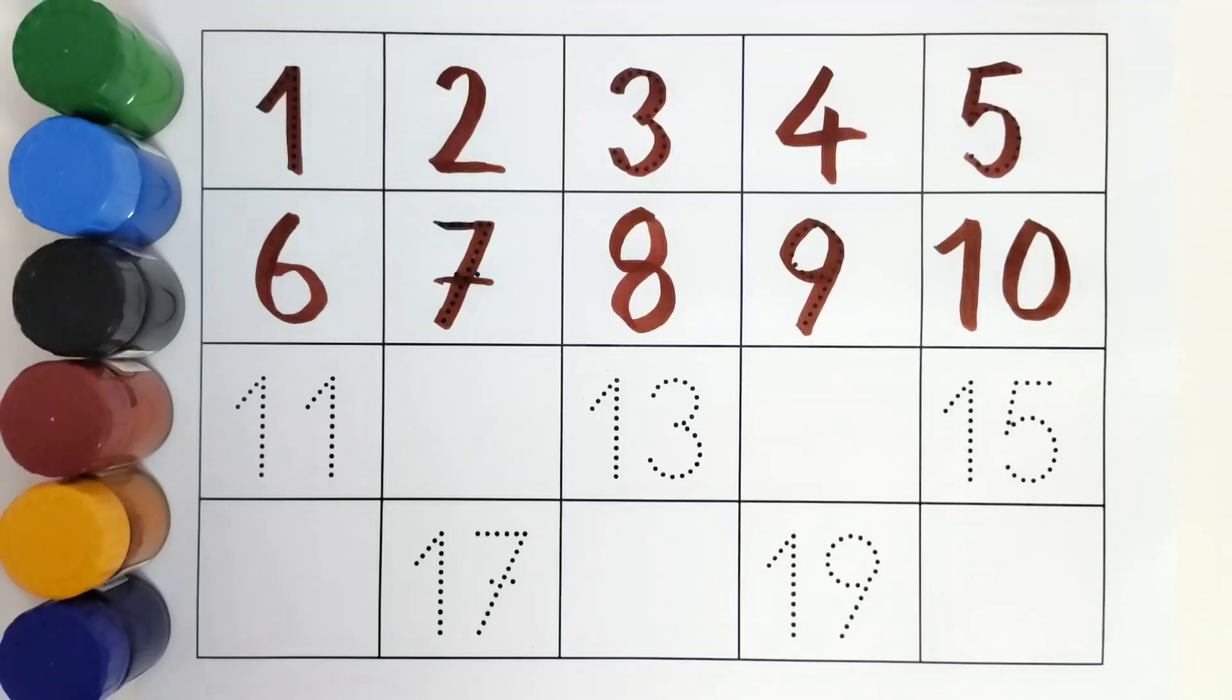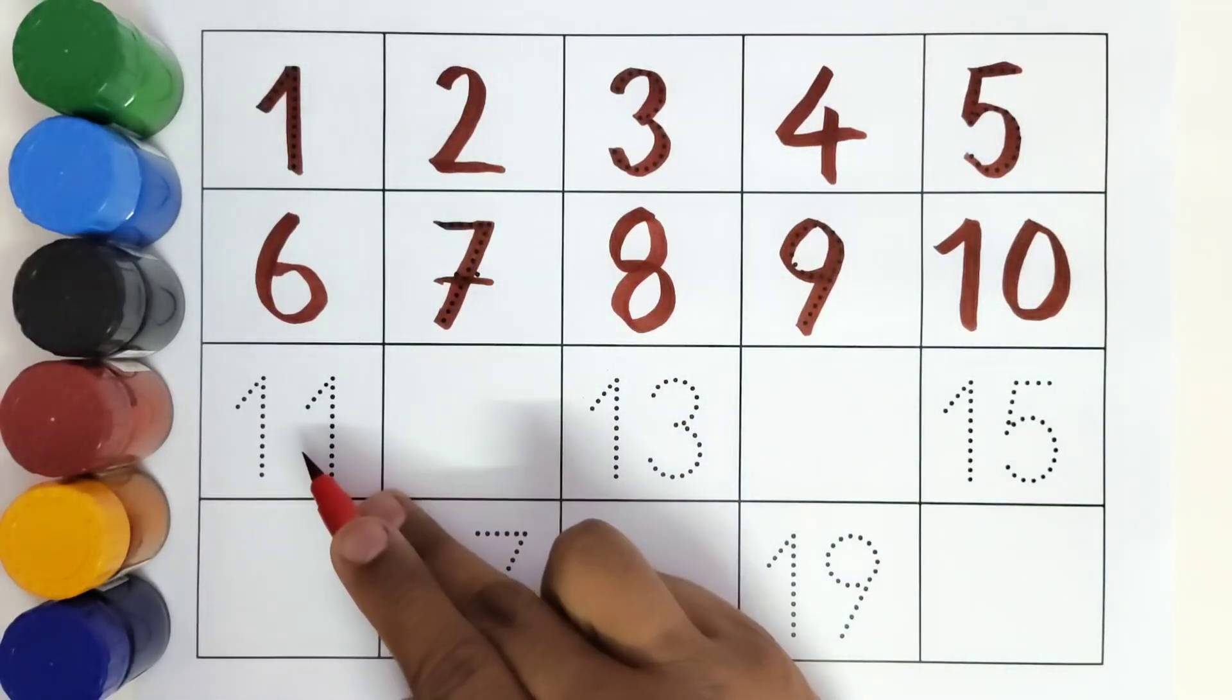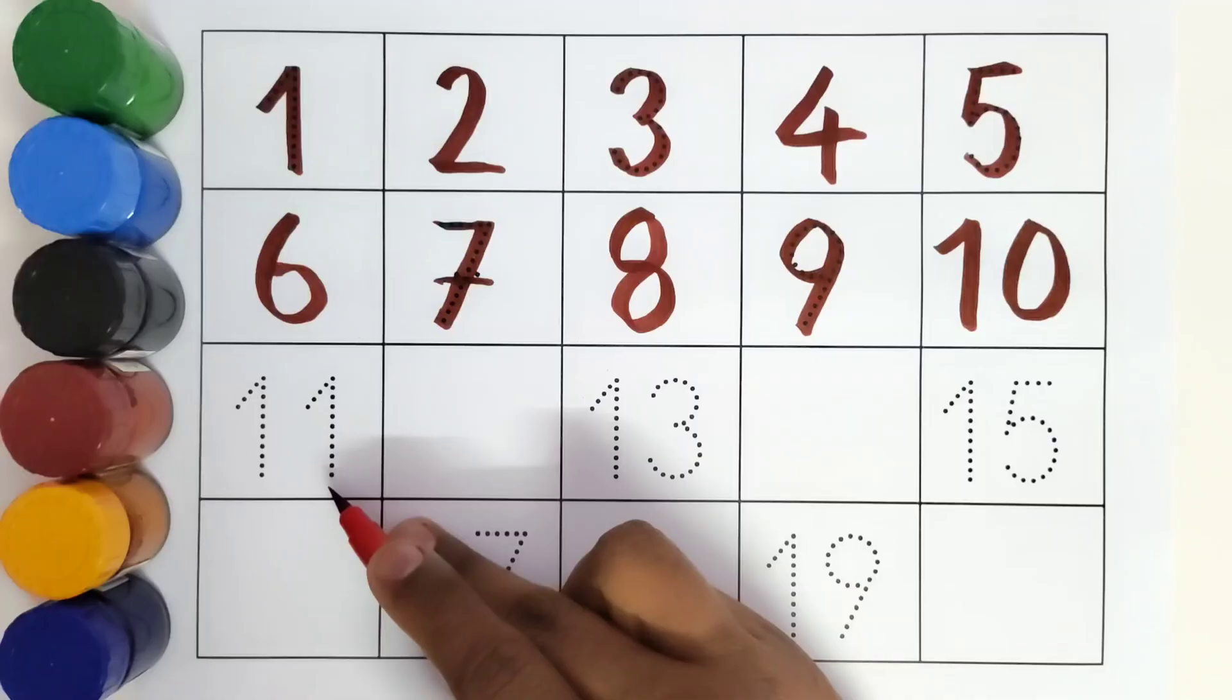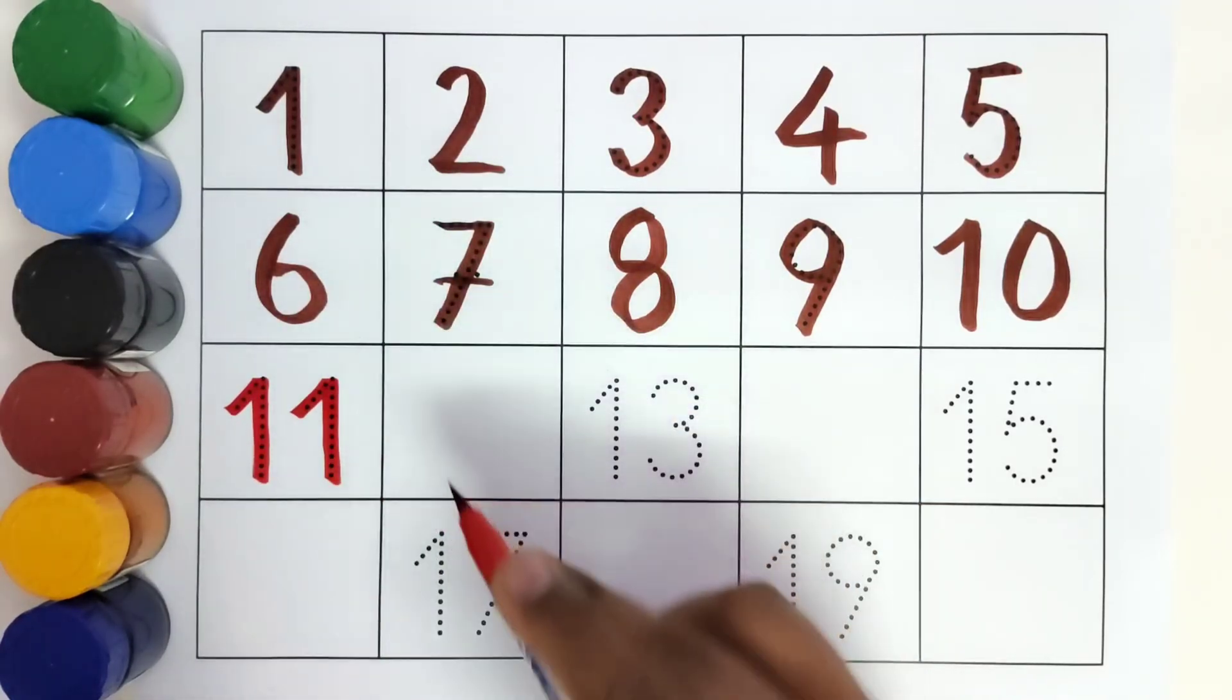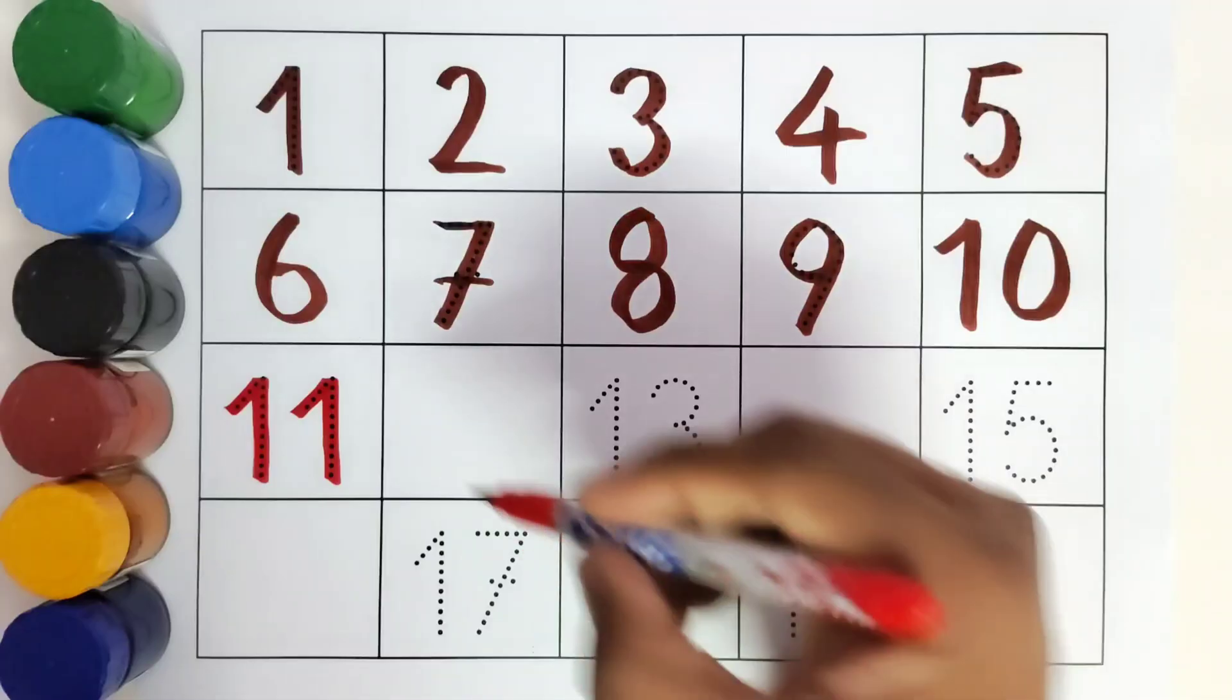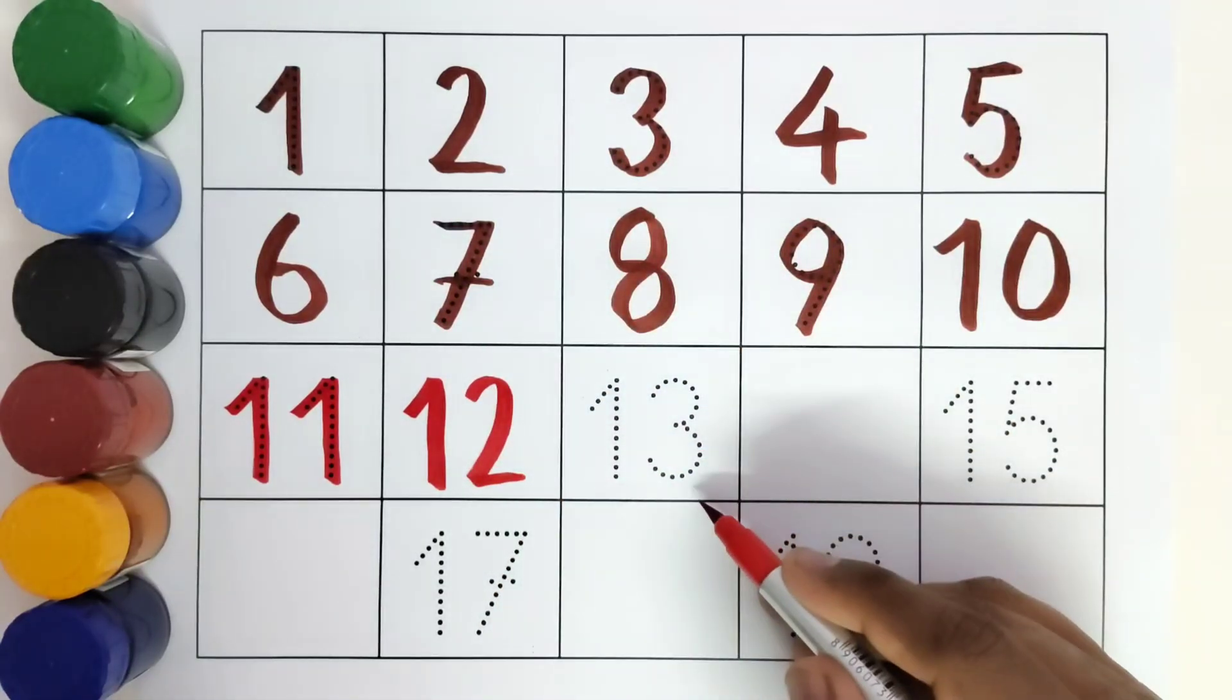Now we will change the color. Which color is this? Red. This is? Eleven. What comes after eleven? Twelve. This is? Thirteen.